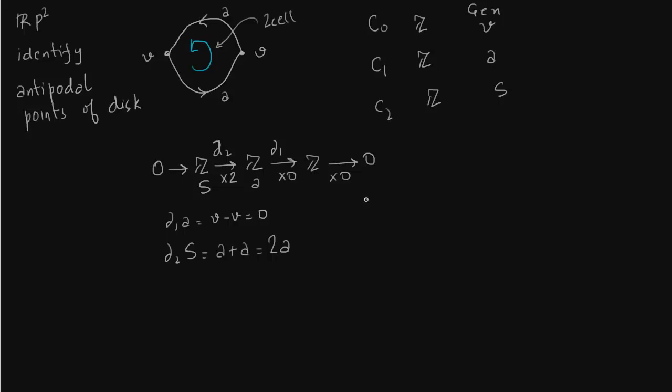So now let us write what the homology groups would be. Now H0 will be C0 over image of delta 1. Now delta 1 is nothing but multiplication by 0. So this is just the 0 map. So we have Z over 0 which will just give you Z.